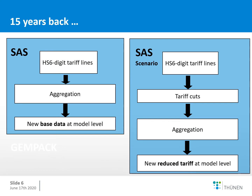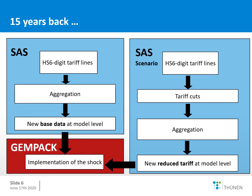We analyzed the WTO negotiations using the statistical software SAS. We built a tariff database at the HS6 digit tariff line level and aggregated it to the model level of the GTAP model to obtain new base data. We then implemented WTO scenarios starting at the HS6 digit level, applied tariff cuts, and aggregated the reduced tariff rates to the model level. Finally, we compared the base data with the reduced tariff rates at the model level and implemented a shock into the GTAP model.